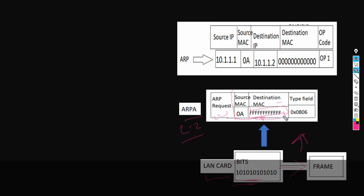The Ethernet protocol will remove the Ethernet header and check that the destination MAC is all F's, that is broadcast, which means this message is for all. Machine B will accept that. The remaining message will be handed over to ARP protocol at Layer 2, because its type field is 0x0806, which is ARP. ARP protocol will check that the opcode is 1, which means it is an ARP request sent by source IP 10.1.1.1 whose MAC address is 0A, and this has been sent for destination IP 10.1.1.2.